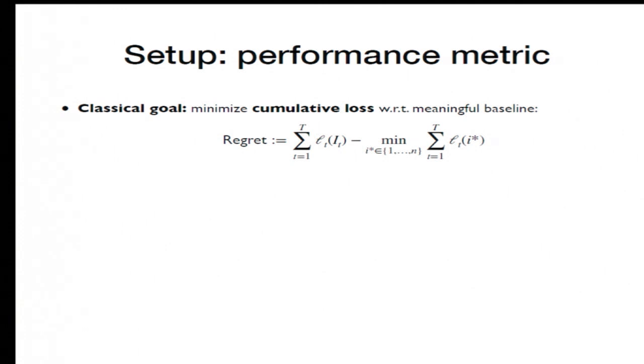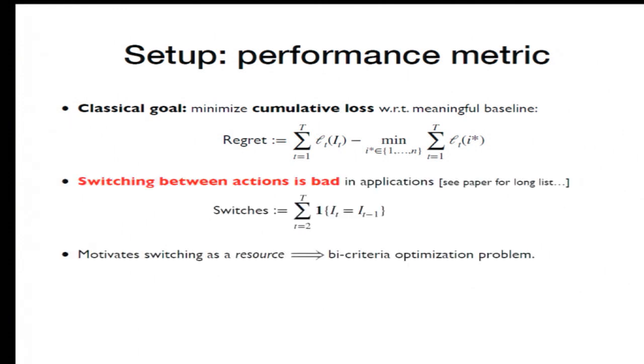In this talk, we'll be also interested in a secondary metric, which is the number of switches the algorithm makes between actions in consecutive iterations. For the sake of time, I'll refer to the paper for applications. But I would dare to say that any application you've ever heard of in experts or bandits, switching is bad.